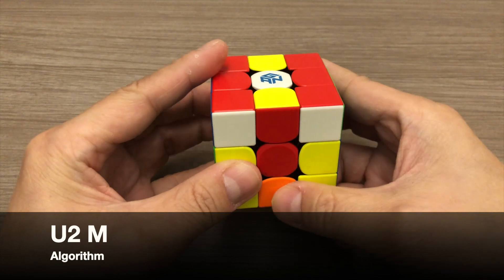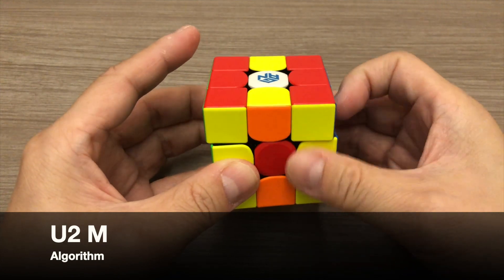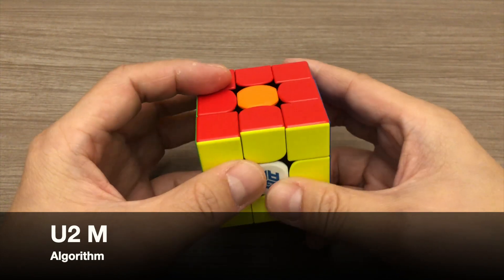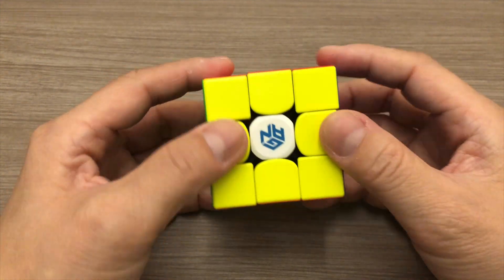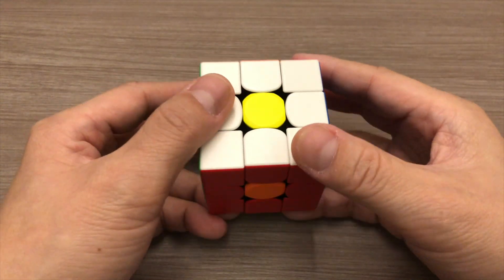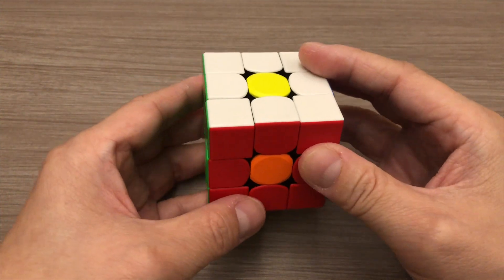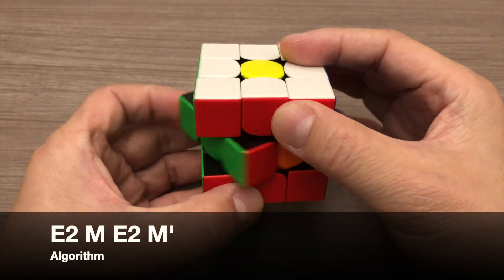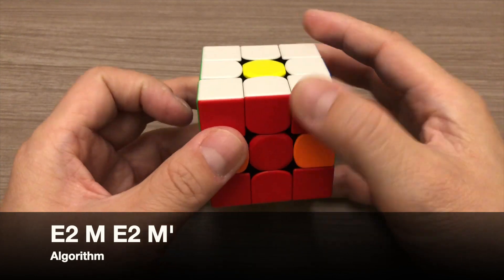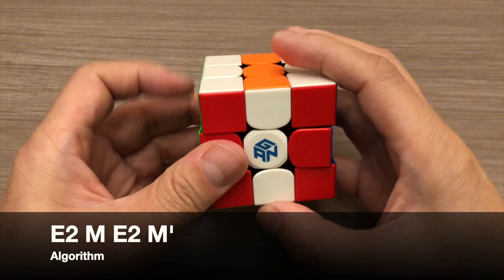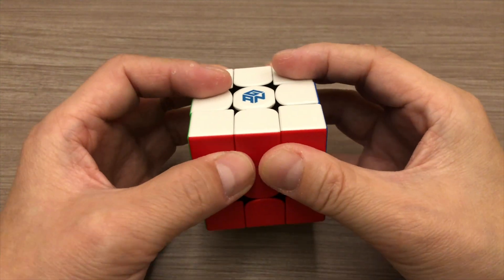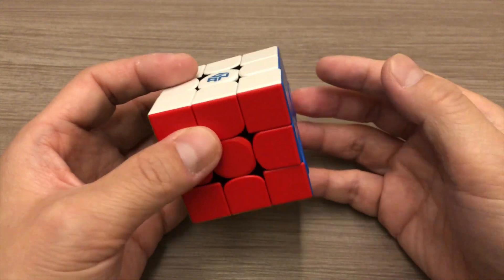U2, M, U2, M. So what we have here is the four dots pattern. To solve this, we will simply apply this algorithm E2, M, E2, M'. And with that, the cube is now solved.